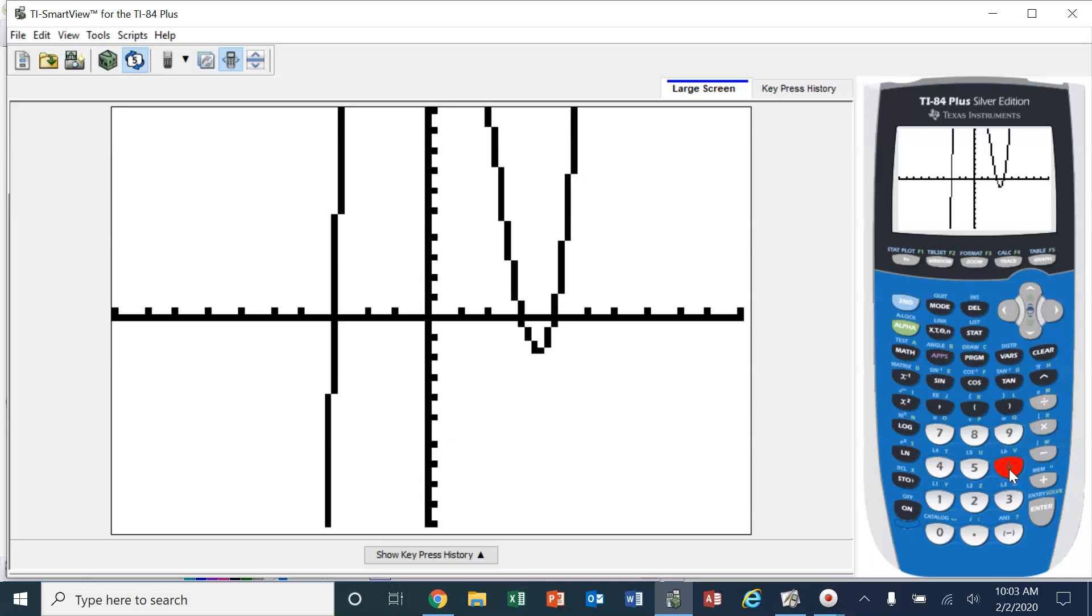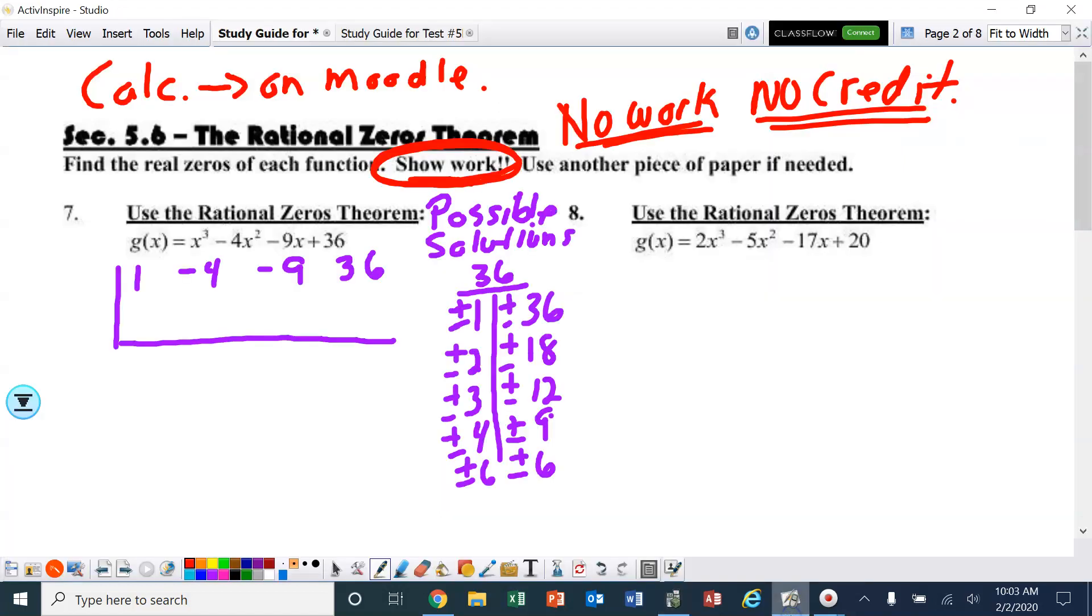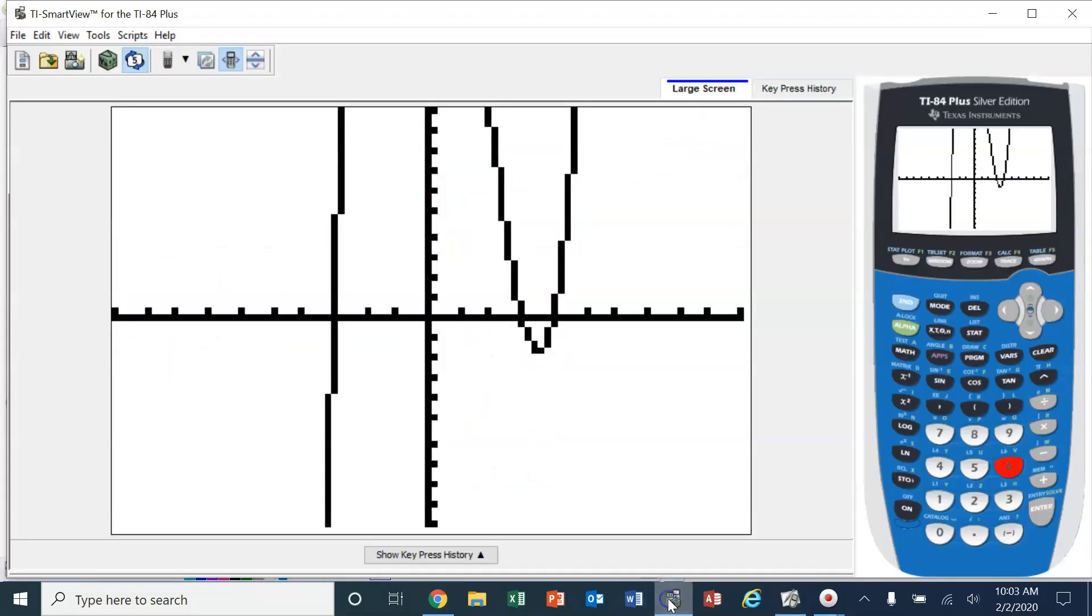I can see all three answers right there on my screen. If your calculator does not look like that, try zoom 6. That should put your screen back to normal. I can already see all three solutions, but I must show work.